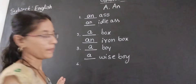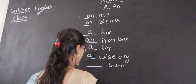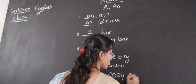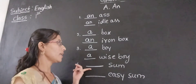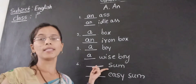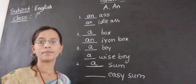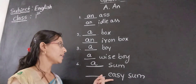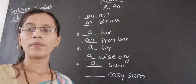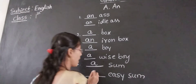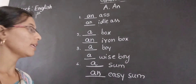Some, easy some. See — S is there, that is a consonant sound. Consonant sound, we have to use A. Then easy — E is there, that is a vowel sound. Beginning of vowel sound, we have to use AN. AN easy some.